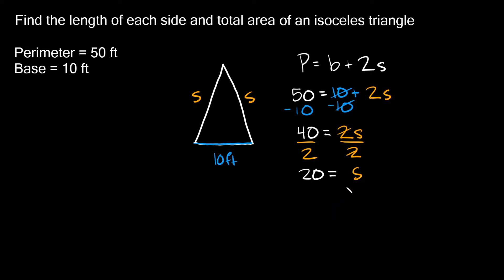So 20 is equal to s or in other words we can write it as s is equal to 20. Well 20 what? What are our units? Well we're working in feet, so s is equal to 20 feet. So then we just solve for s, so that means this one is 20 feet and this one is 20 feet. So we just found the length of each side.